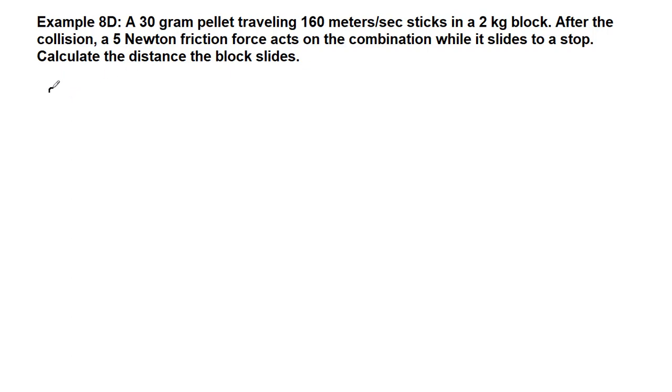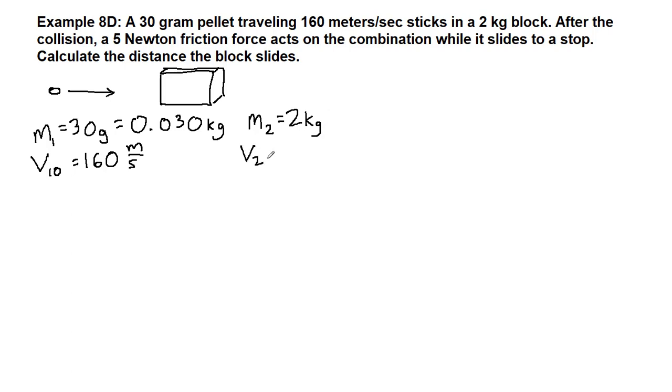So we have a 30 gram pellet, so we'll call that mass 1. 30 grams, we need to turn into kilograms, so we divide by 1,000, we get 0.030 kilograms. And it's traveling at an initial velocity of 160 meters per second, and it sticks in a 2 kilogram block. So that block was just stationary, not moving, that's our second mass. And it's going to have a collision with that block, so the second mass that we learn about is 2 kilograms. And we're not being told that it's moving, it's just sitting there. The picture was on the lecture slides, so the initial velocity is 0.